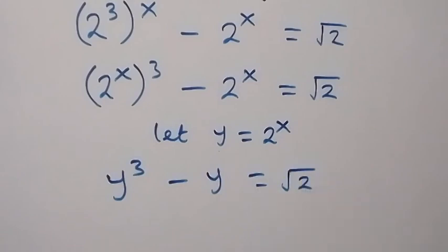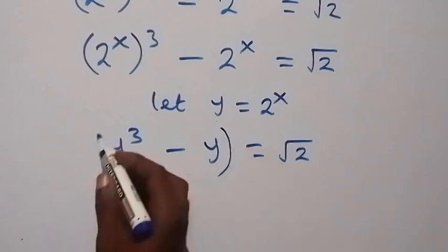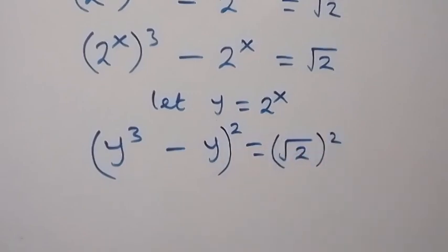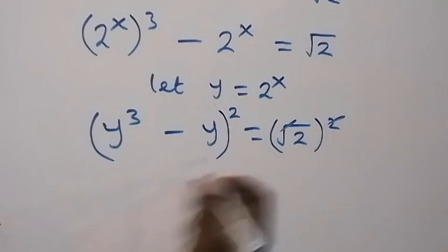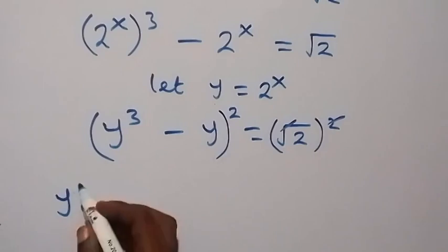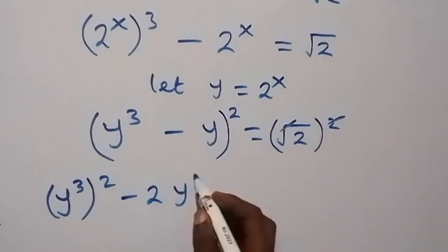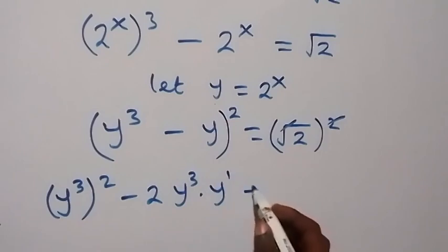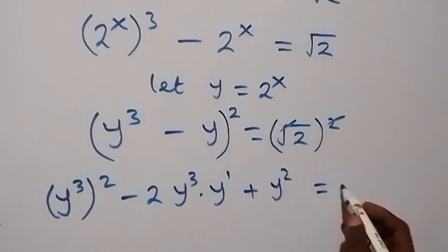In the next step, we can raise everything on this side to power 2, and also raise this side to power 2, so that we cancel the square root here, and we have 2 left. Then expanding this power of 2, we have y raised to power 3 squared, minus 2 times y raised to power 3 times y raised to power 1, then plus y squared, and is equal to 2.